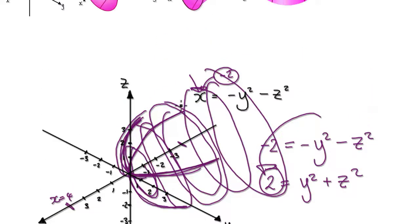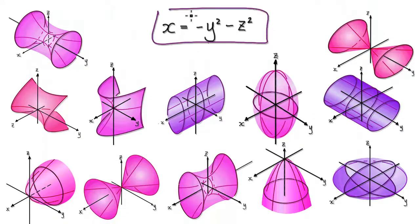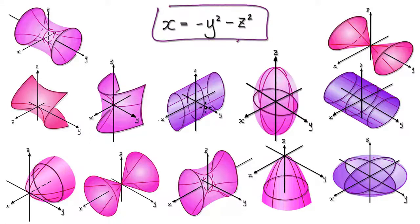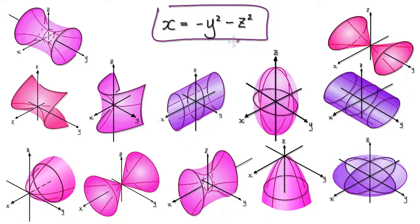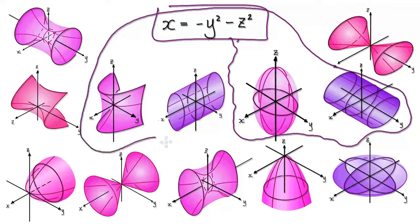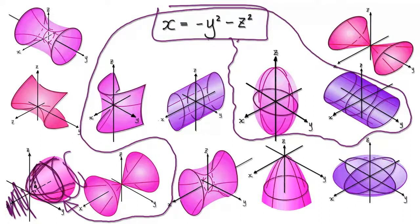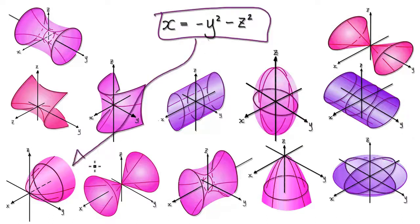Going back to the question — which surface does this equation satisfy? You're looking for a surface satisfying all the conditions described. As it turns out, it will be this one here, because you get a negative quadratic cross-section, lots of circles of increasing radius, and nothingness on the positive x side. So this equation gives us this surface.